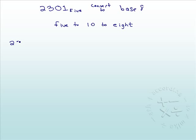We multiply by the position. The 1 is in the 5 to the 0 column. The 0 is in the 5 to the first column. The 3 is in the 5 squared column, and the 2 is in the 5 cubed column.